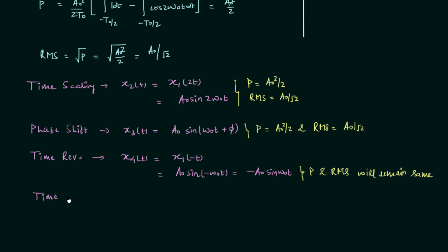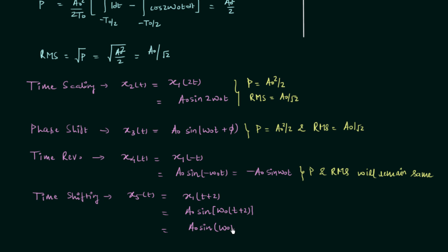The next operation is time shifting. Signal x5t = x1(t + 2) = a0·sin(ω0(t + 2)) = a0·sin(ω0t + 2ω0). When you calculate the average power for this signal, it remains a0²/2 and the RMS value remains a0/√2. So time shifting has no effect on the average power or the RMS value.